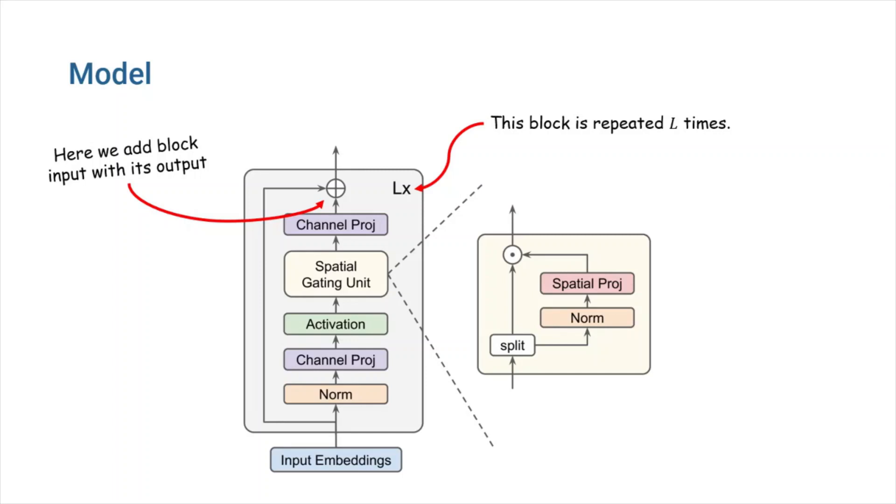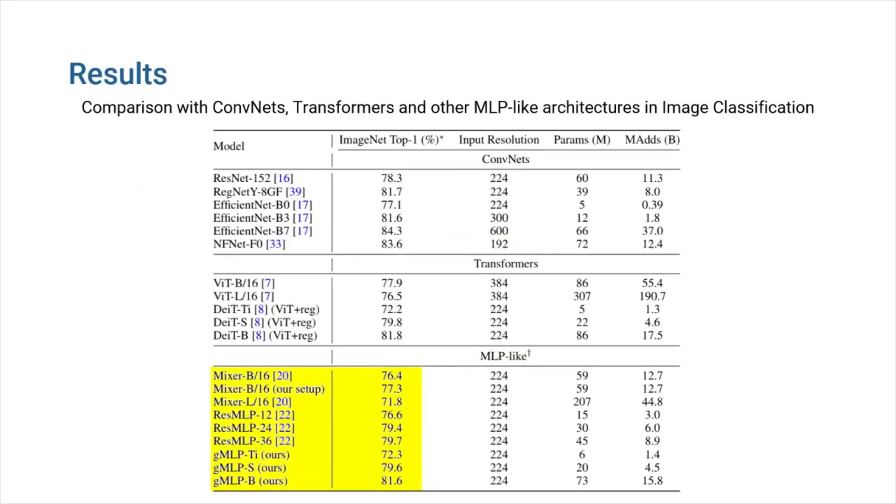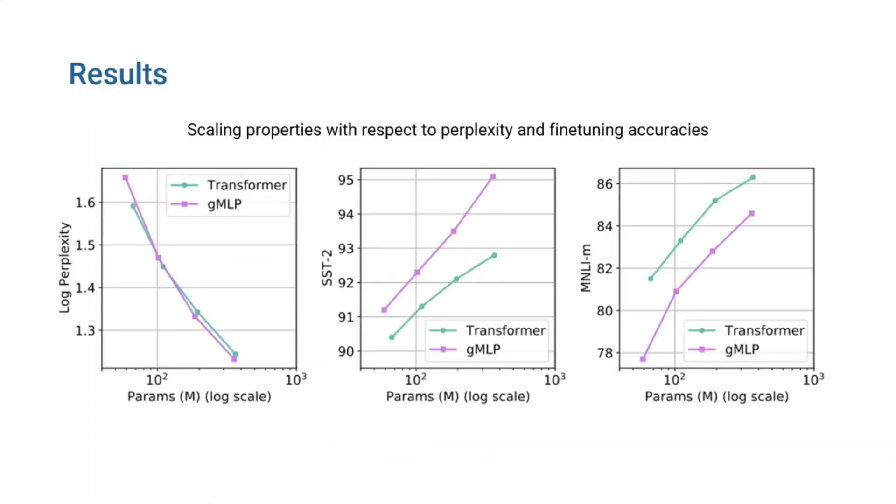In image classification, as you can see here, the GMLP models outperform other MLP-like architectures. And while they are competitive with transformers, their performance is behind the best existing ConvNet models. Now, let's see how this new model performs in NLP tasks.